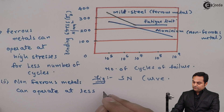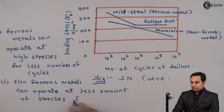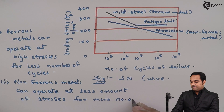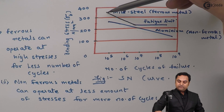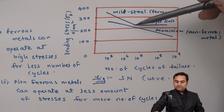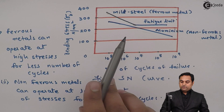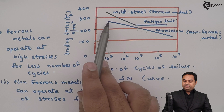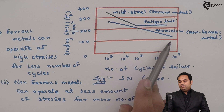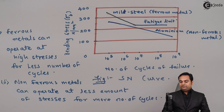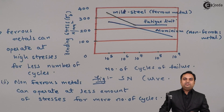Ferrous metals can operate at high stresses for fewer number of cycles, and after a certain stage the stress remains constant so they can operate for infinite cycles. Whereas for non-ferrous metals, they operate at less stress and as we go on decreasing the stress they can operate for a very large number of cycles — the number of cycles of failure increases for non-ferrous metals. In this video we have seen the SN curve. Thank you.